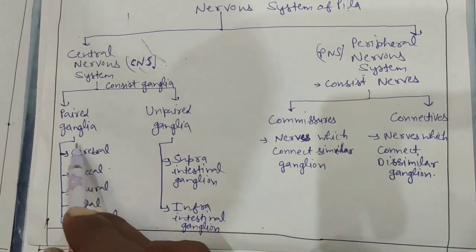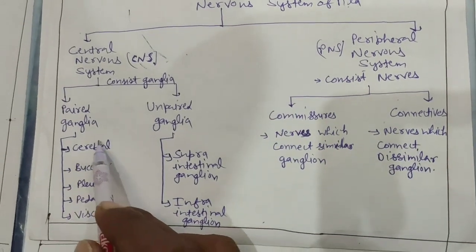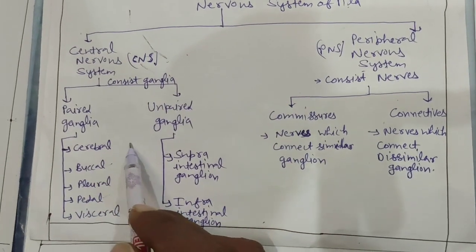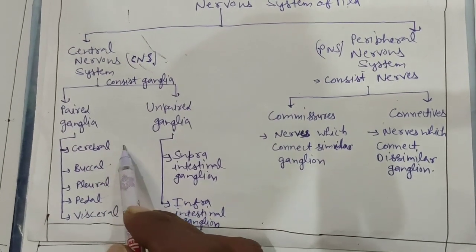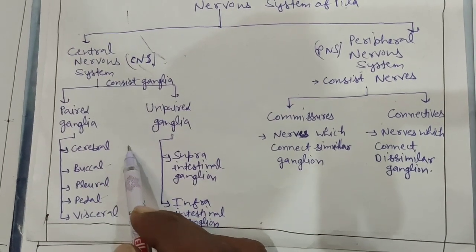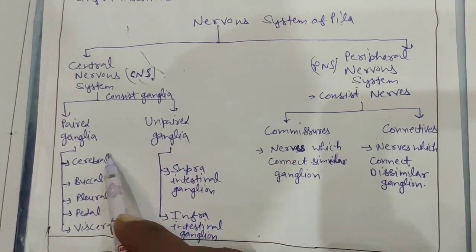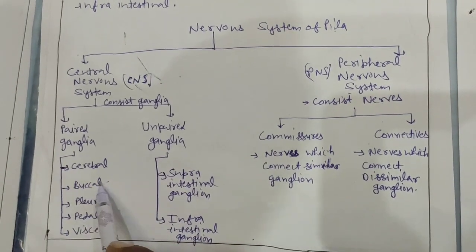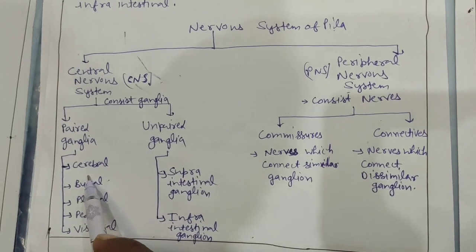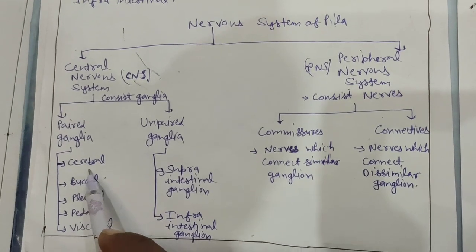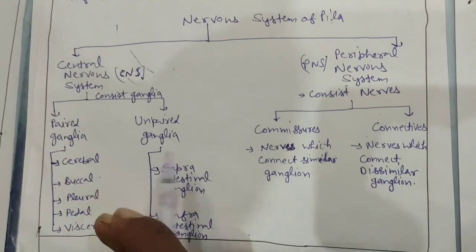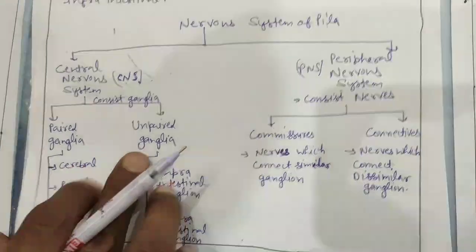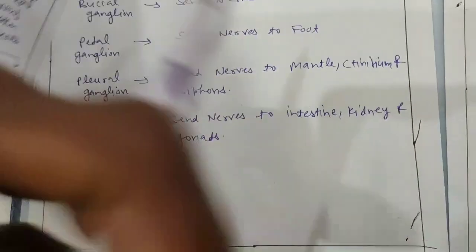For example, two cerebral ganglia — the same type of ganglion — are attached by commissures. Two different ganglia, such as a cerebral ganglion and a buccal ganglion, are attached with the help of connective nerves. Now we discuss the nervous system through a diagram.